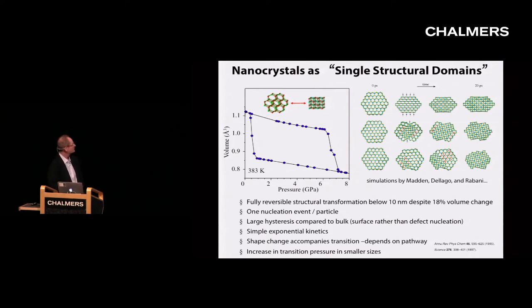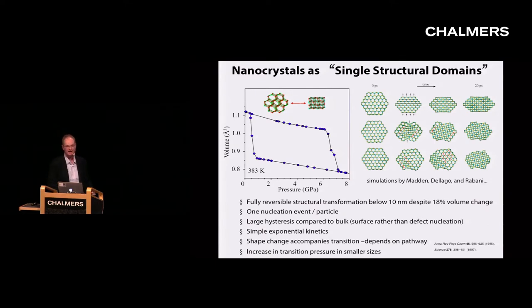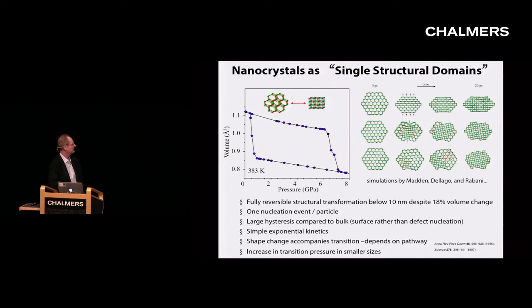This also shows another principle very important for nanostructures: they can undergo big volume changes like a molecular isomerization. This crystal can pop between two crystal structures with an 18 percent volume change without ever having a crack appear or breaking up into smaller pieces—it can just go back and forth like that.